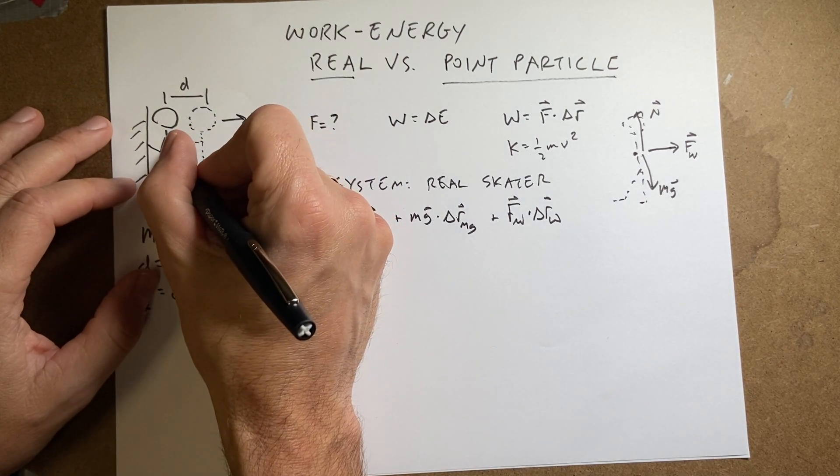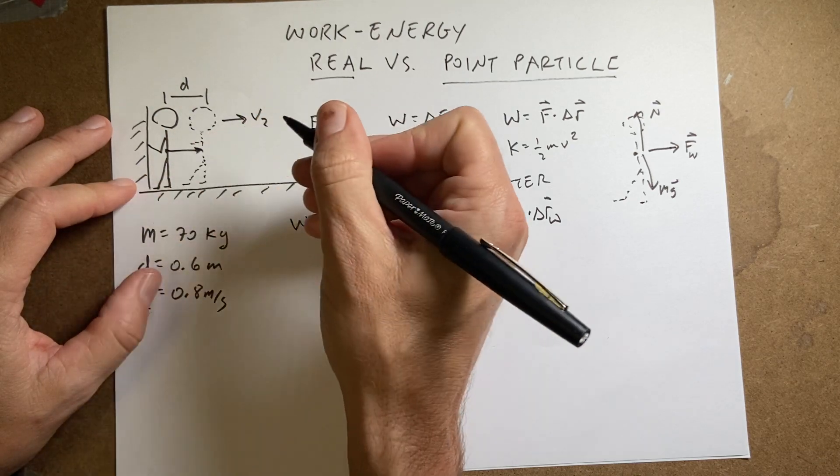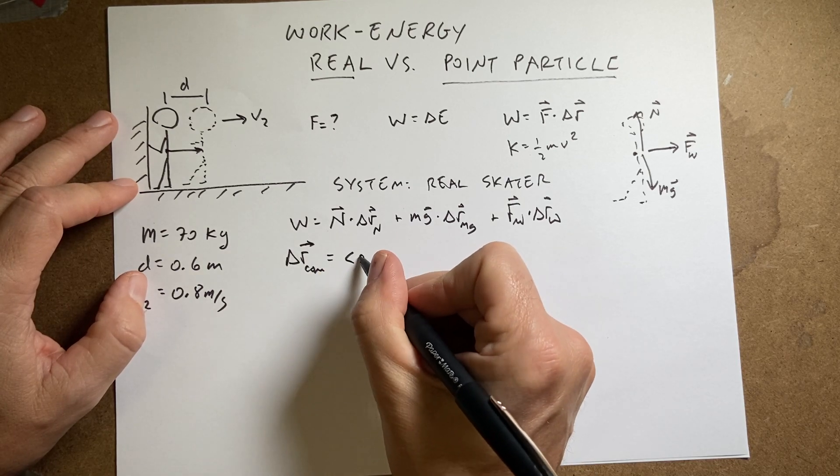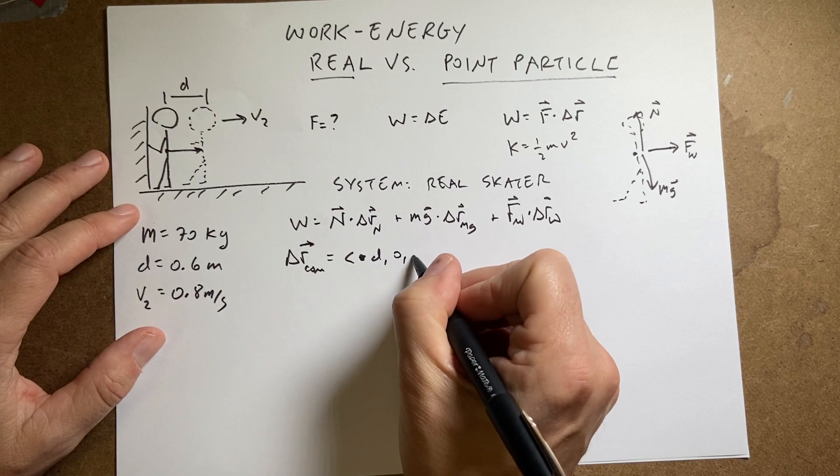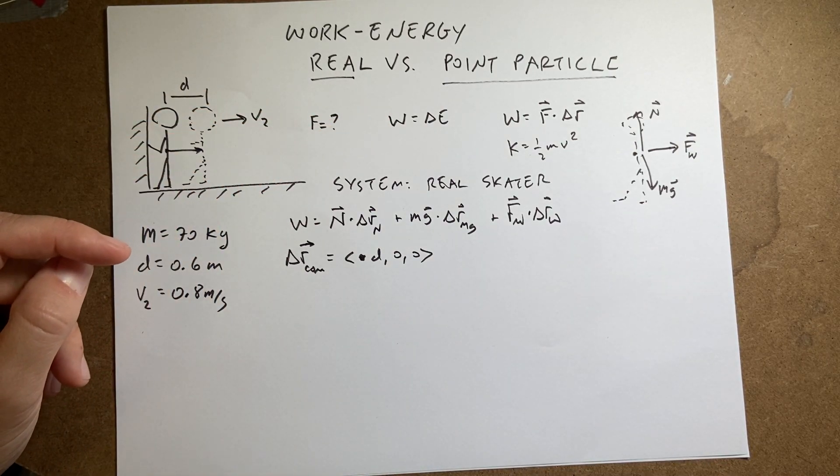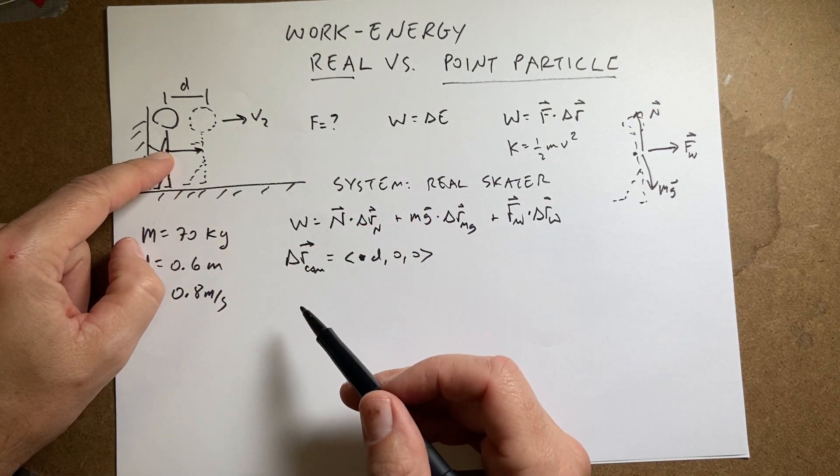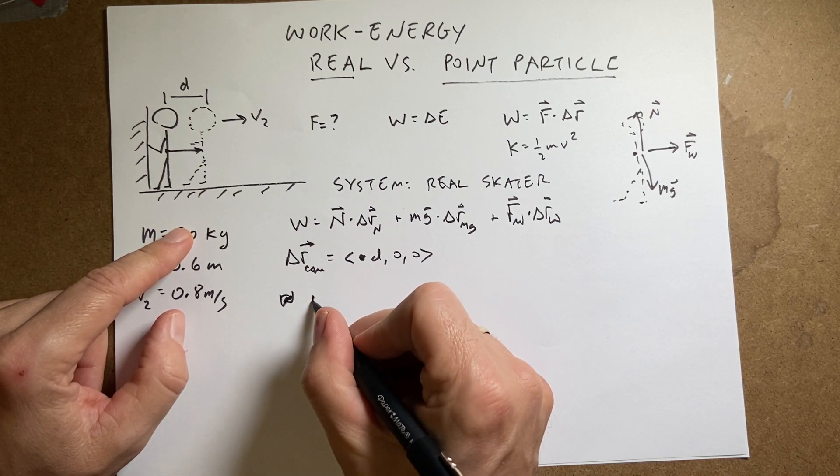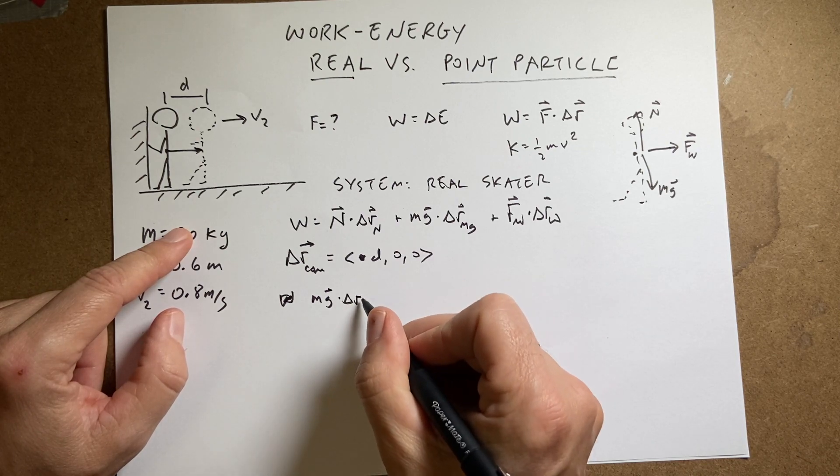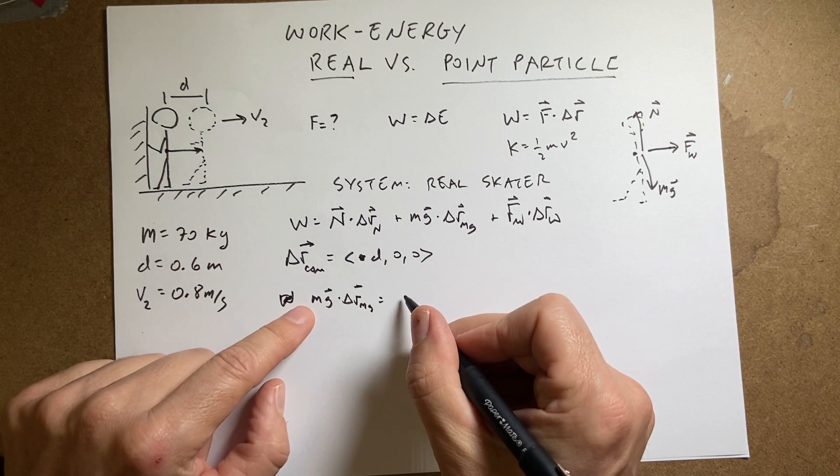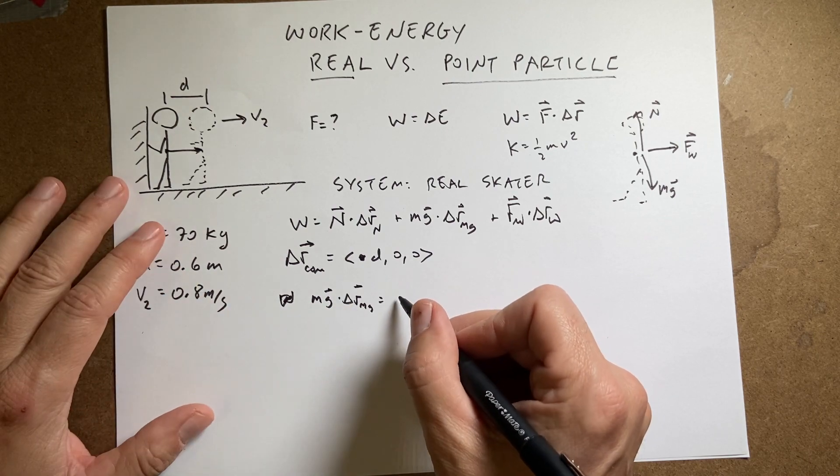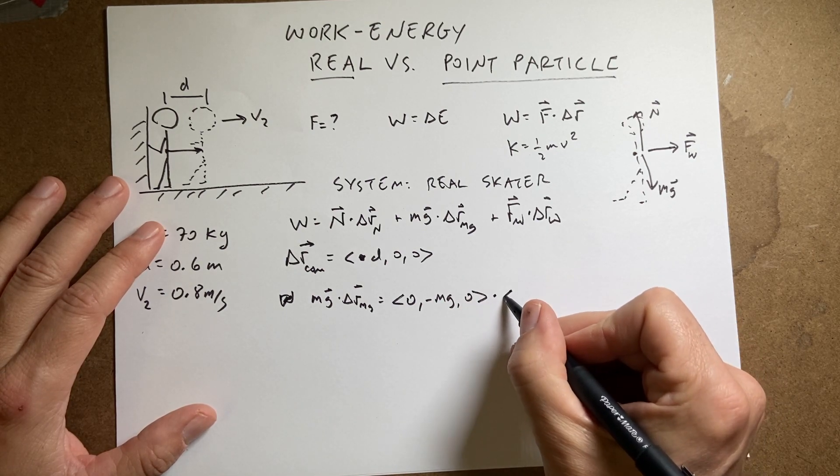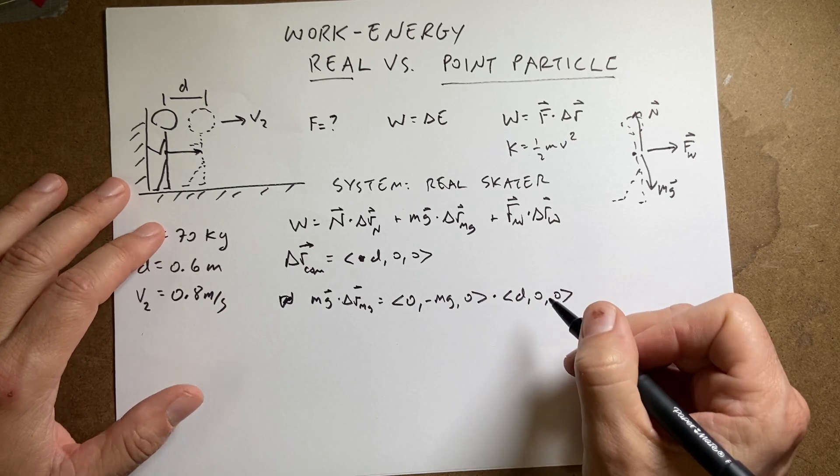I have to do displacement for each force because they could move different amounts. In this case, here is my delta r for my center of mass like that. Let's say delta r center of mass is going to be equal to actually d, zero, zero. That's how far she moved if that's the x direction. If I look at the gravitational force, the gravitational force is always pulling on her. The work done by the gravitational force, let's just say mg dot delta r_mg is going to be equal to the vector mg dot this. Let's just write that out as zero, negative mg, zero dot d, zero, zero. That's how far the displacement moved.